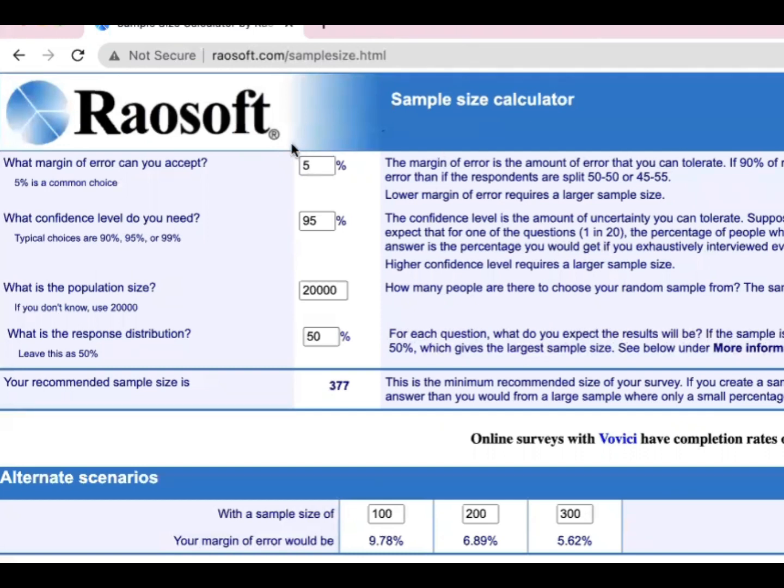For example, how we are going to find - we have here in default or you can change this margin of error. This is the amount of error that you can tolerate, so it can be 5% or less than 5%. The confidence level is 95%. Usually for social sciences, we are using 95% confidence level and 5% margin of error. This is the amount of uncertainty that you can tolerate.